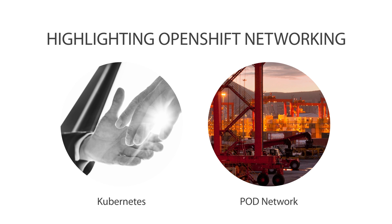The Kubernetes networking model was conceived to simplify Docker container networking that had some drawbacks. It did this by introducing the concept of a pod and pod networking, which allows multiple containers inside a pod to share an IP namespace and communicate with each other on IPC or on local host.